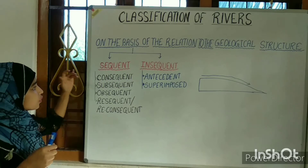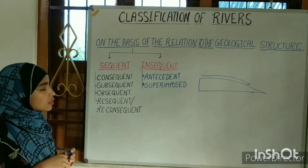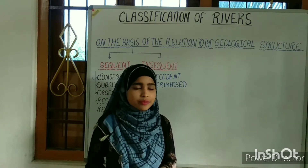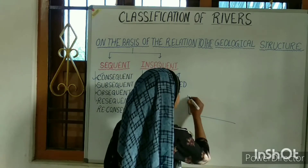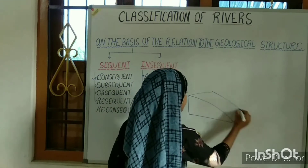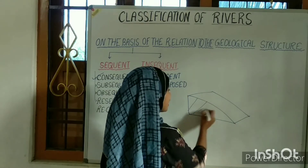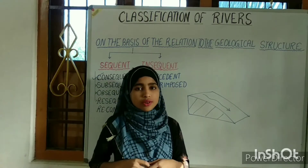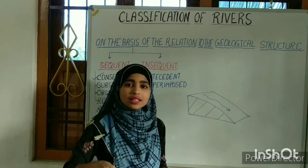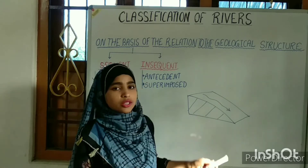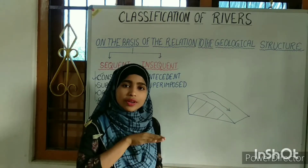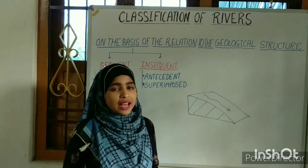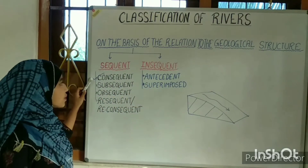So let's understand what the consequent stream is. The consequent stream is the first to be originated in a region. The river initiates first of all, and this river follows the regional slope or the geological structure. As this river always follows the dip direction, that is why it is also known as the dip stream. The Ganga is the best example of the consequent stream.